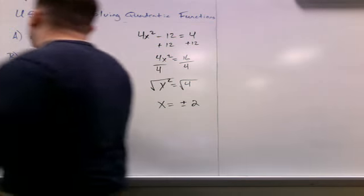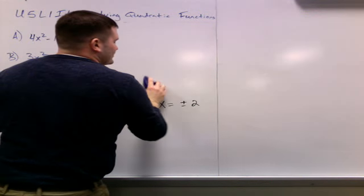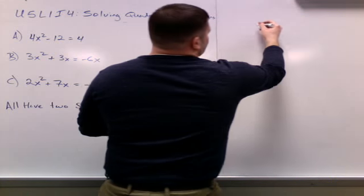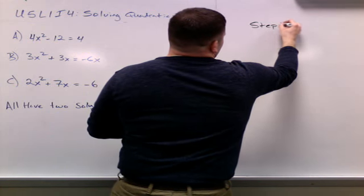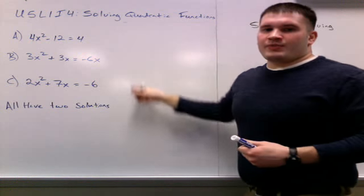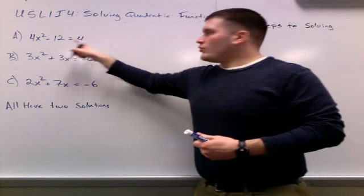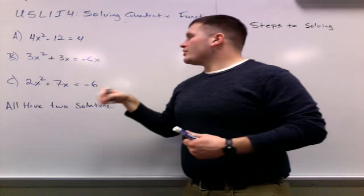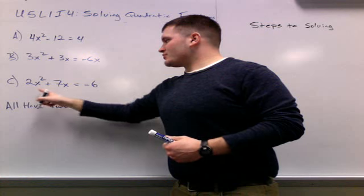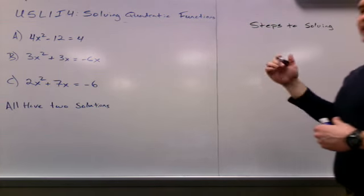Alright, the other types, B and C. In order to solve these, there's a little process. So, we'll write our steps over here. Steps to solving. Now, if we look at A, B, and C, the biggest difference between the three equations is in A, we have only one x term, and x squared. In B, we have x squared and x. And in C, we have x squared and x. Whenever we have two x terms that do not have the same power, we need to factor.